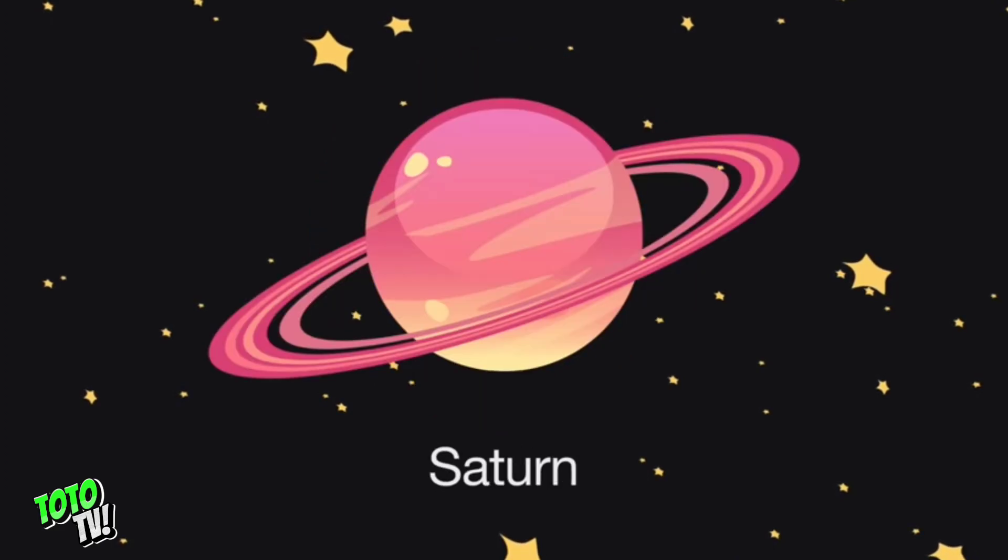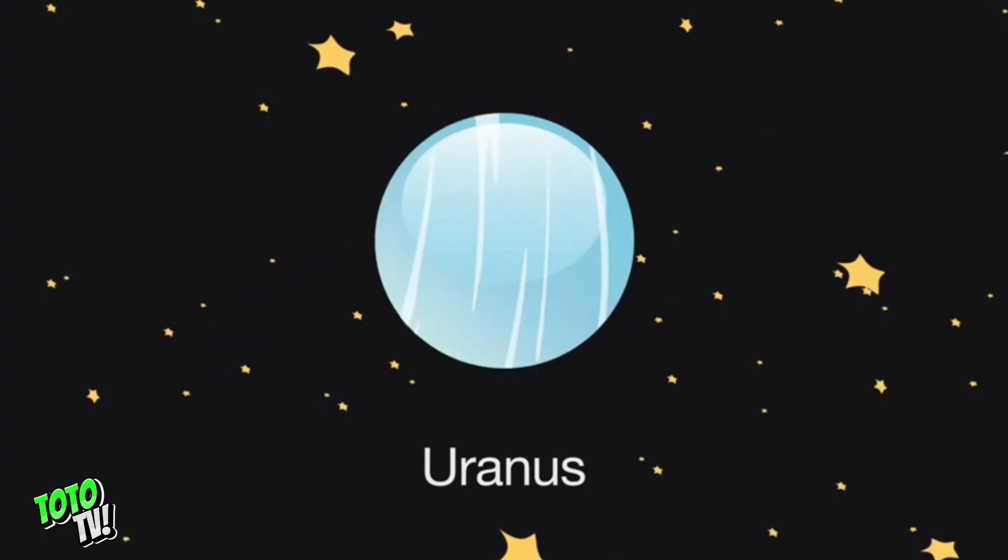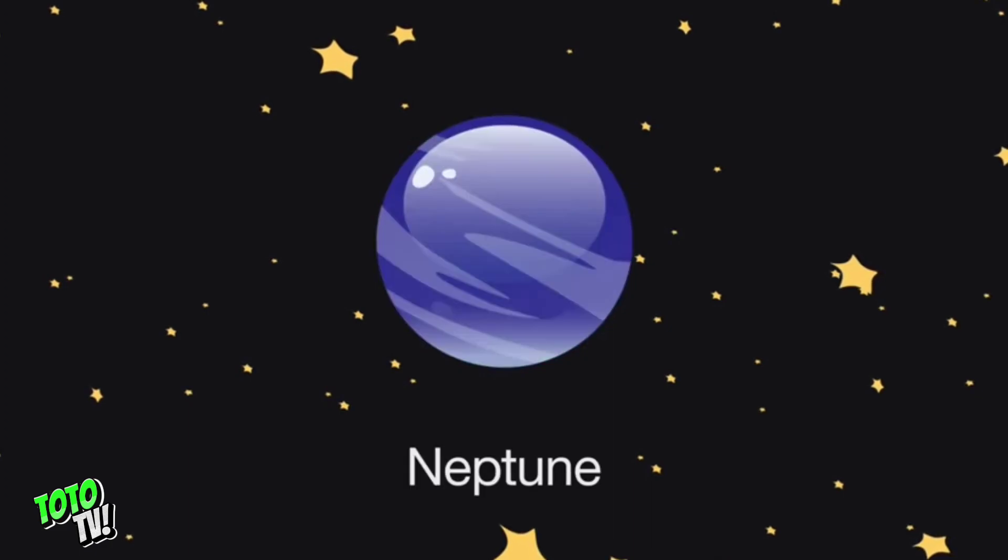The sixth planet is also a gassy planet called Saturn. It has beautiful rings. The seventh planet is Uranus, the ice giant. It spins on its side. The eighth planet is Neptune, furthest and coolest planet of all.